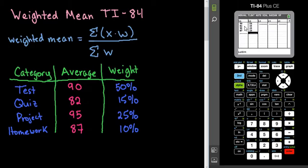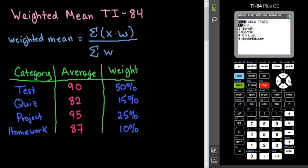After I've entered in all of my data and checked to make sure that everything matches up, I hit the stat button again, and I go over to calculate, stat, calculate, and I choose the option 1VarStats.